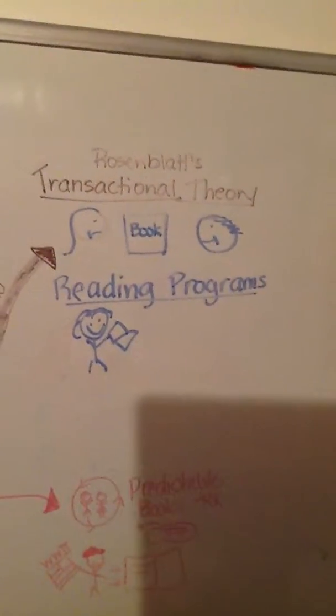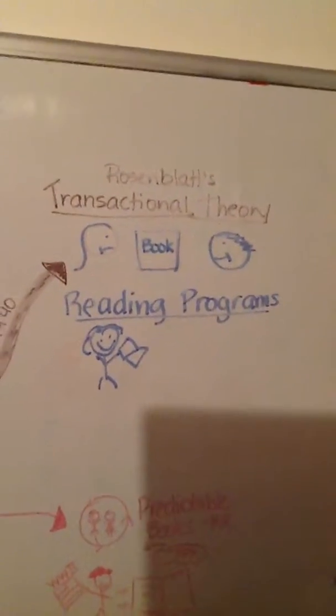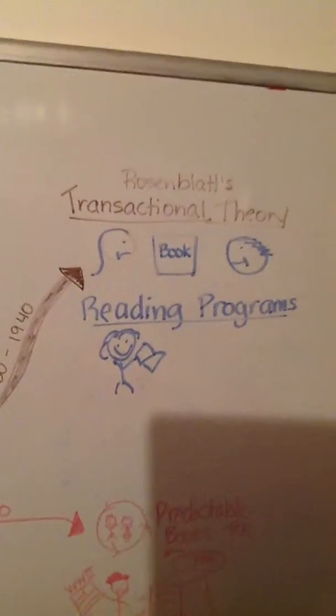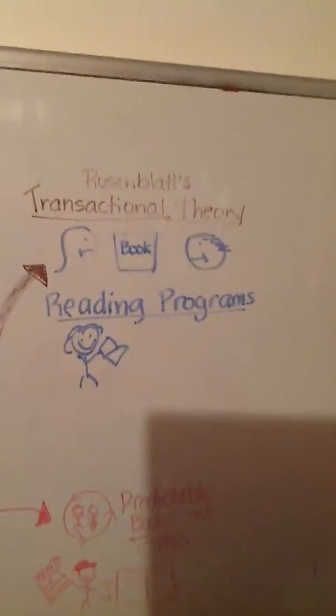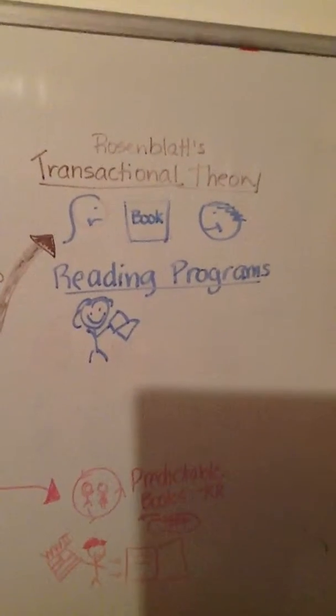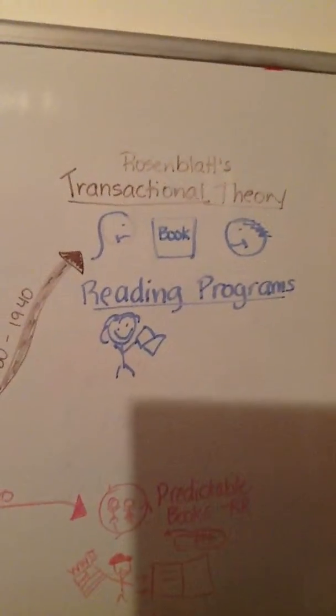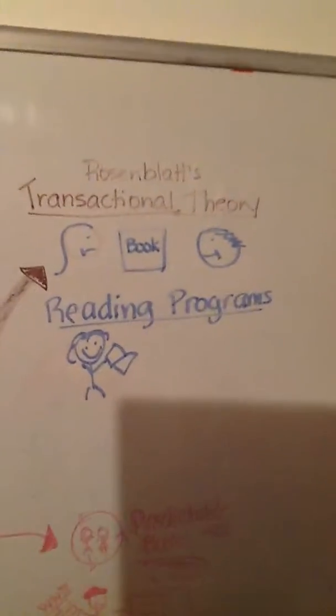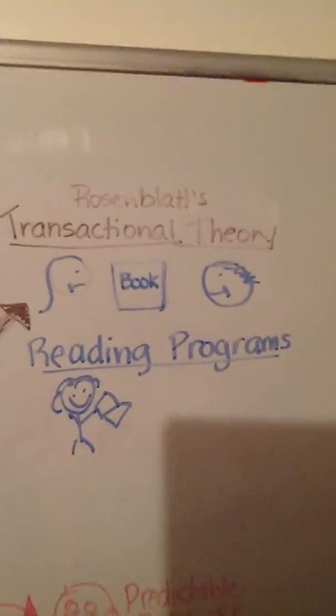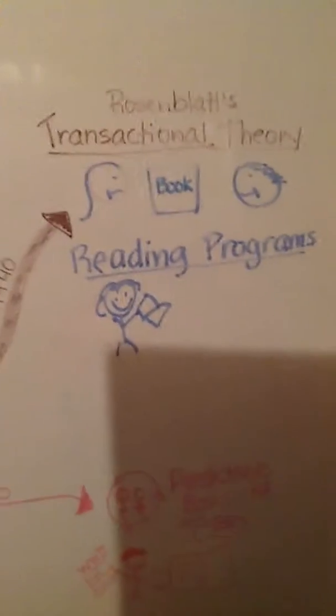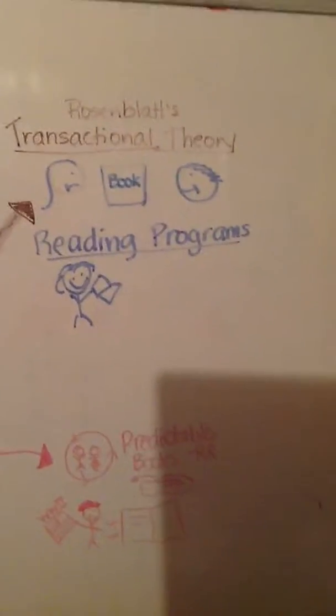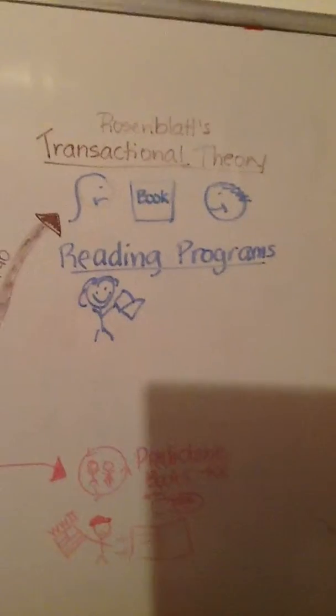In the 1930s and 40s, Rosenblatt's transactional theory. She thought that reading was a transaction between the reader and the text. She voiced that theory that all people don't interpret text the same way because they bring different background knowledge, which is why I put the two faces with the book in the middle. I thought that would pretty much sum that up, and it's so true.